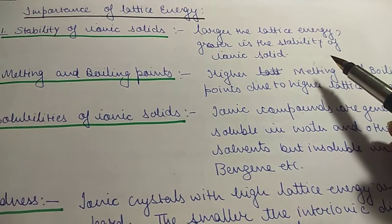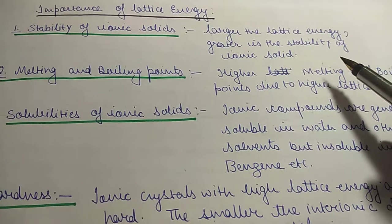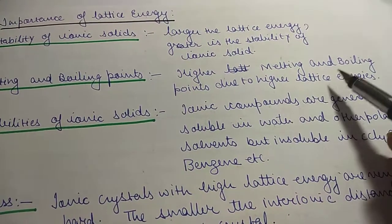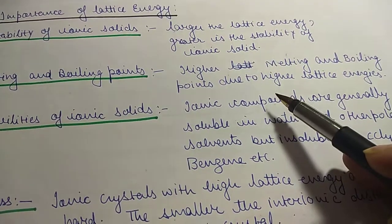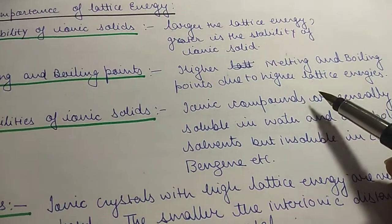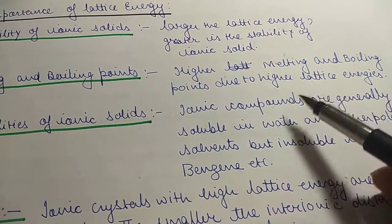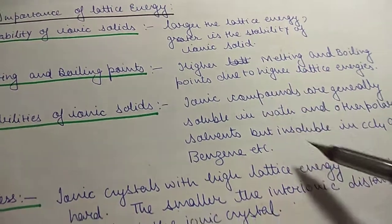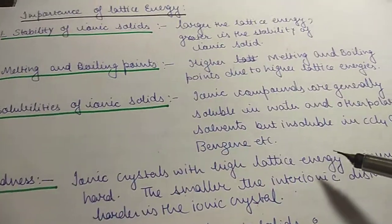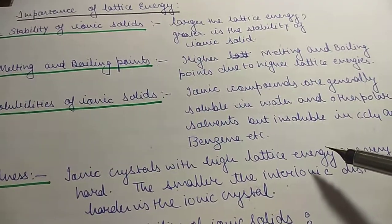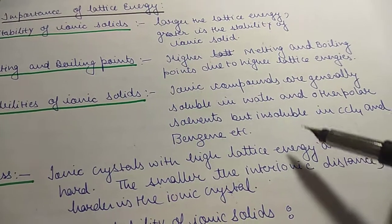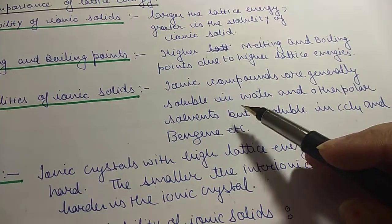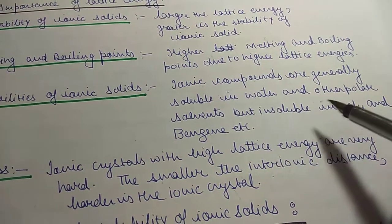Second, melting and boiling points — when lattice energy is high, the melting and boiling point will also be higher. Third, solubilities of ionic solids — ionic compounds are generally soluble in water and other polar solvents.